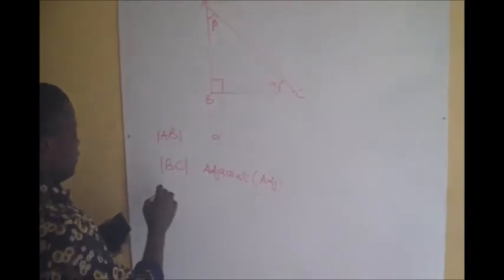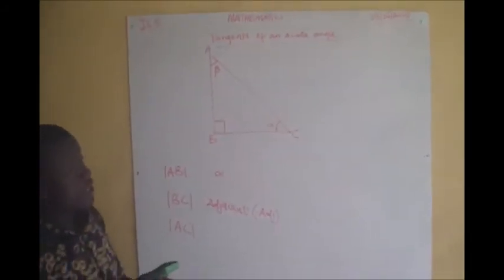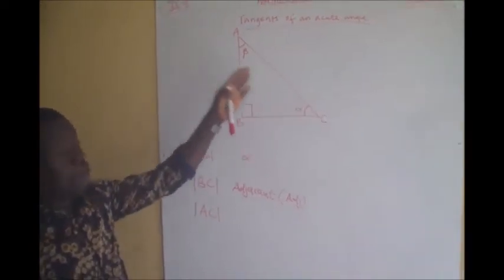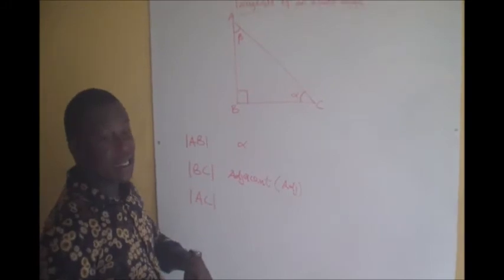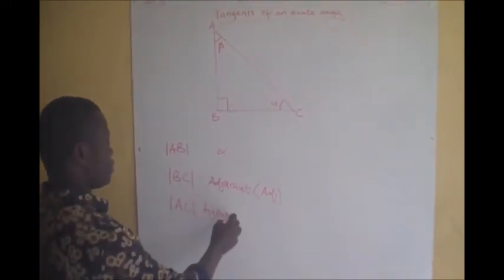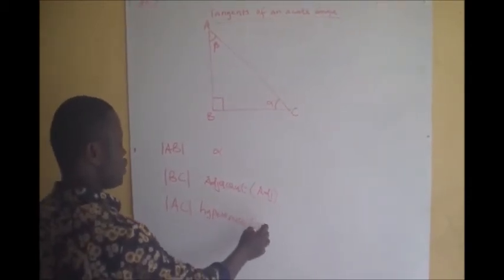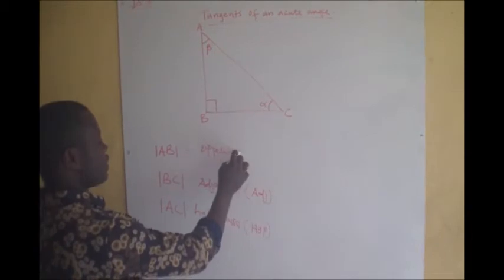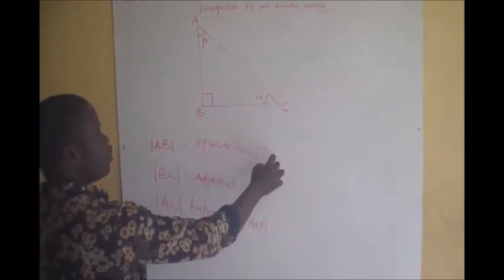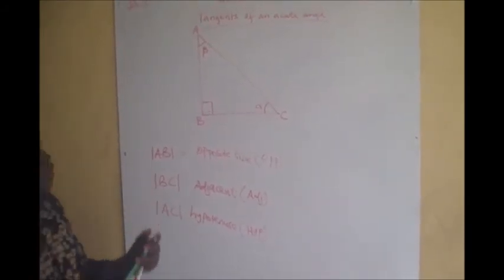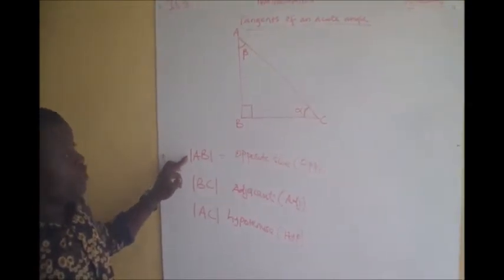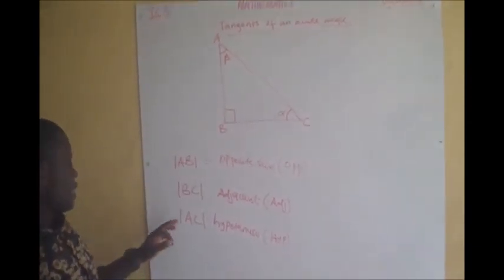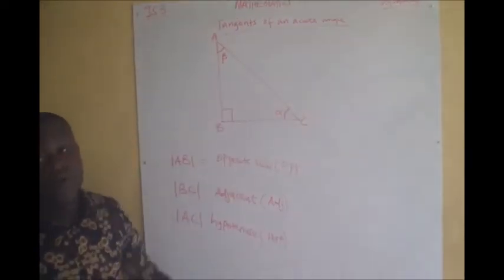Now look at the longest side — that is line AC. Line AC is the longest side of that right-angled triangle on the board, and it is called the hypotenuse — the longest side of a right-angled triangle. So we have line AB, which is the opposite side to angle alpha; line BC, which is the adjacent side to angle alpha; and line AC, which is the hypotenuse — the longest side of the triangle.